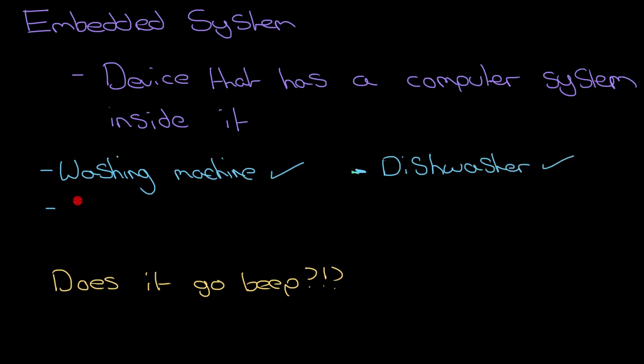What about, going away from the kitchen, what about a TV? Well, certainly a smart TV will. There are some very old TVs which might not have a computer system inside. But definitely smart TVs, they connect to a network. They're pretty much more computer than they are TVs these days. That is definitely an embedded system.